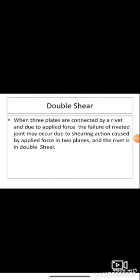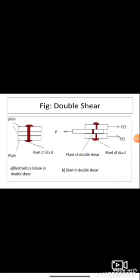Double shear: when three plates are connected by a rivet and due to applied force, the failure of the riveted joint may occur due to shearing action caused by the applied force in two planes, and the rivet is in double shear. Looking at the diagram, we have a rivet before failure in double shear, with three plates — plate 1, 2, and 3 — joined together by the rivet.